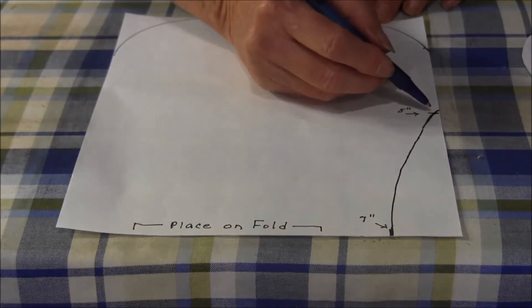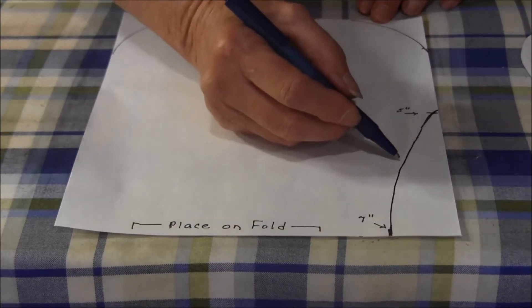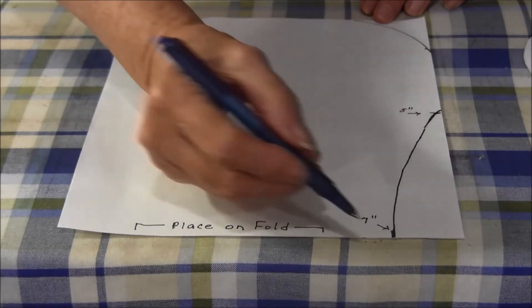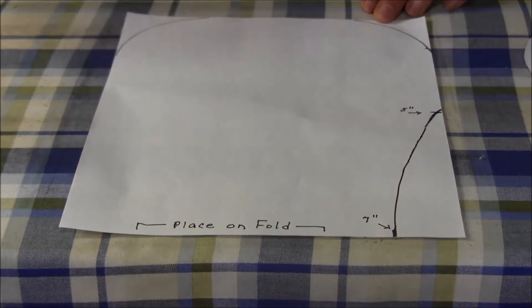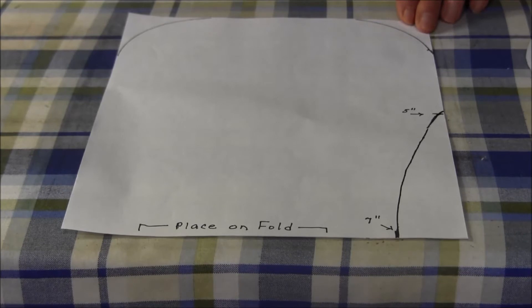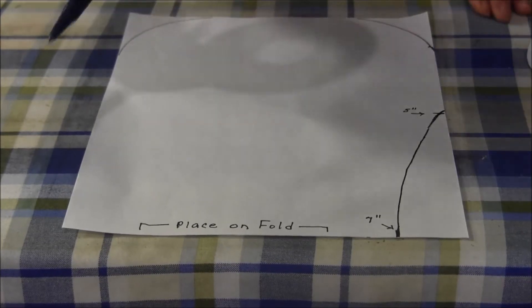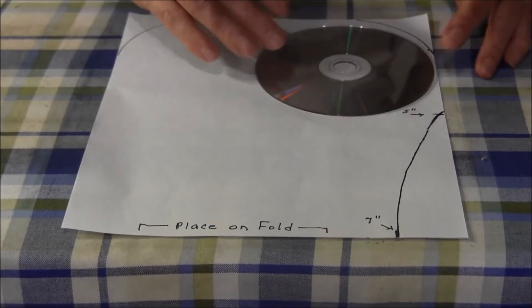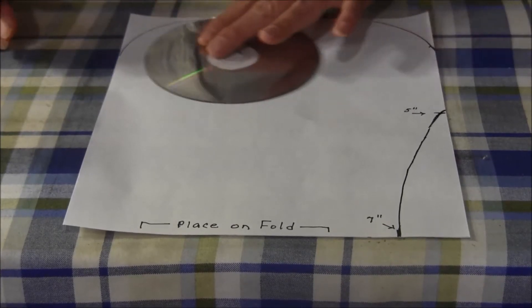Draw a nice curved line from the 5 to the 7. Then you want to round the top corners, and I use a disc to round the top corners.